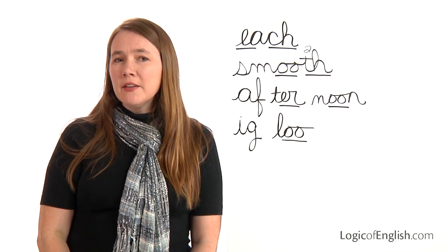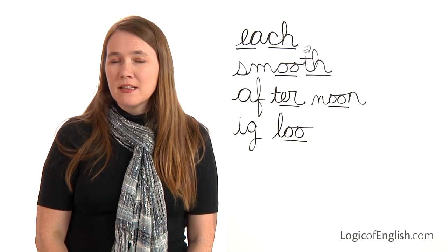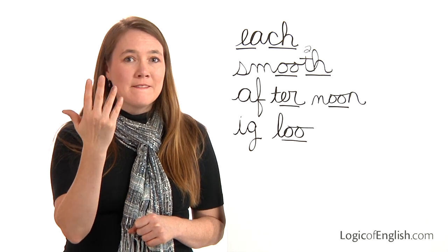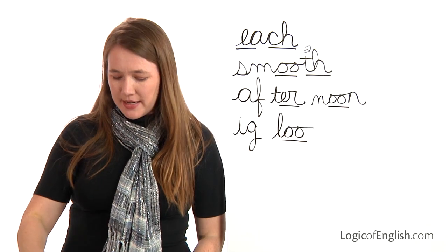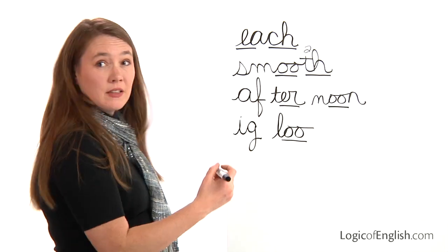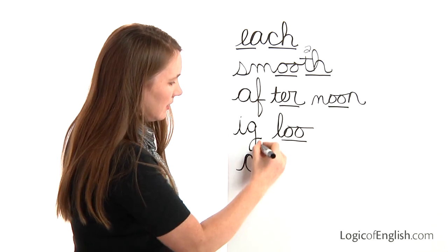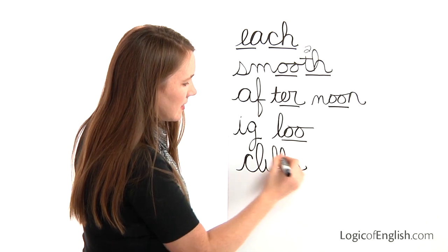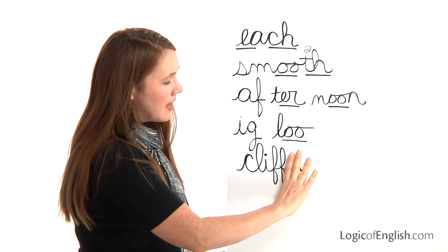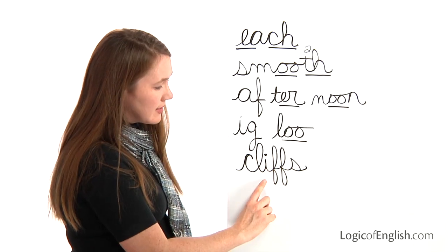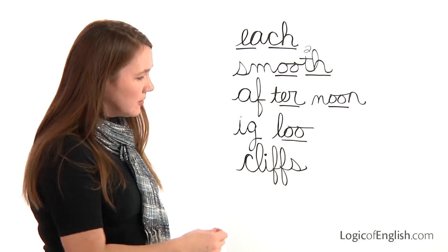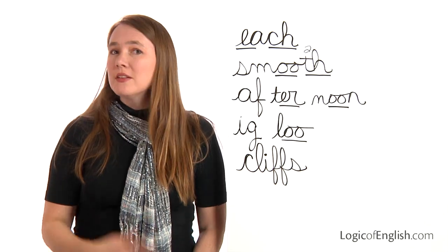The next word is 'cliffs.' The cliffs in that area are very high. Let's sound it out: K (this is a ck), L, i, f, f, s. Go ahead and write it. Now help me write it: K, l, i, f, f, s. What is the singular? It's cliff — we doubled the F after a single short vowel at the end of the base word, and we can still add S to make it plural.